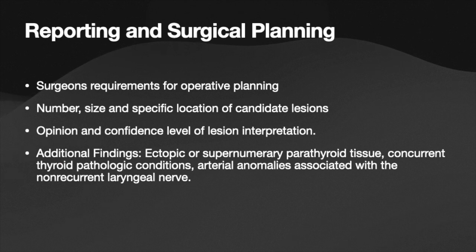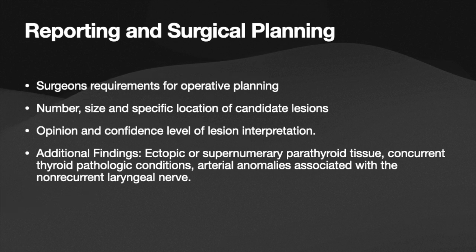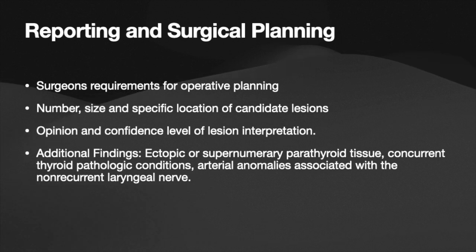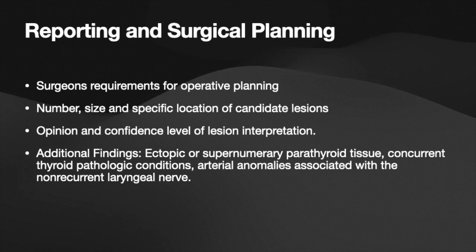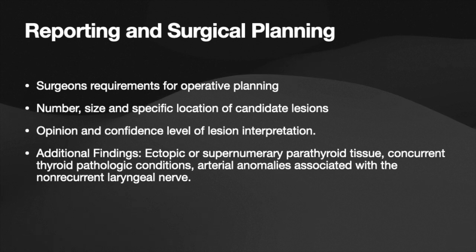A systematic approach to 4D CT interpretation minimizes missing parathyroid lesions. For superior parathyroid glands, begin searching along the posterior aspect of the upper thyroid lobes, then focus on retropharyngeal and retroesophageal positions. Less commonly, superior glands are located within the carotid sheath, intrathyroidally, or in the scalene fat. For inferior glands, start adjacent to the lower thyroid lobe, then look along the thyrothymic ligament and within the mediastinum.